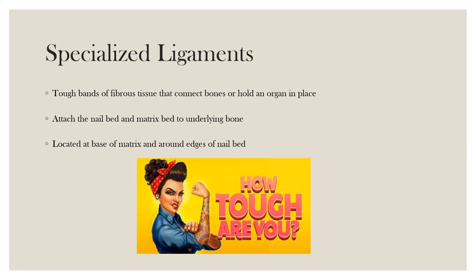A ligament is a tough band of fibrous tissue that connects bones or holds an organ in place. Specialized ligaments attach the nail bed and matrix bed to the underlying bone. These ligaments are located at the base of the matrix and around the edges of the nail bed.